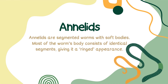Annelids are segmented worms with soft bodies. Most of the worm's body consists of identical segments, giving it a ring-like appearance.